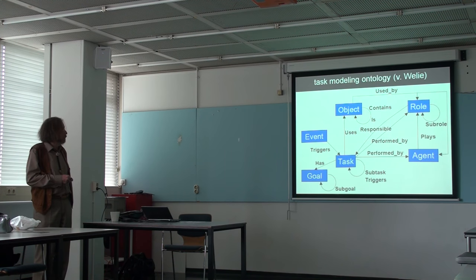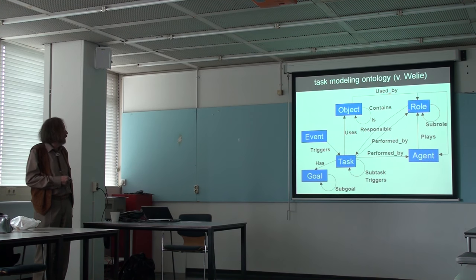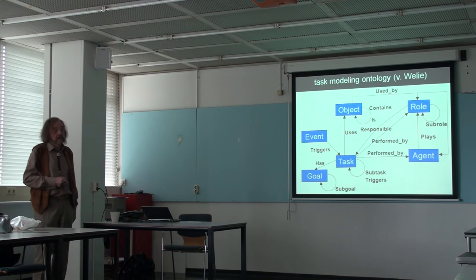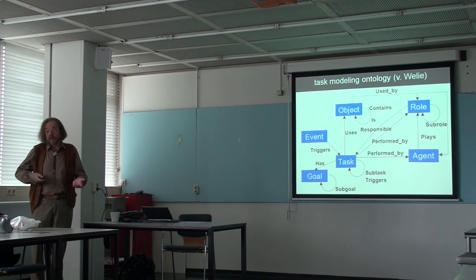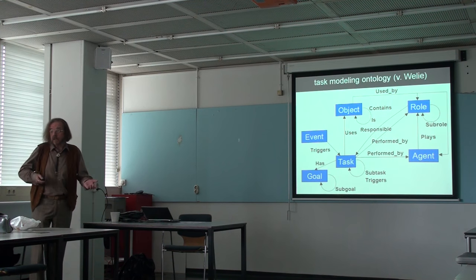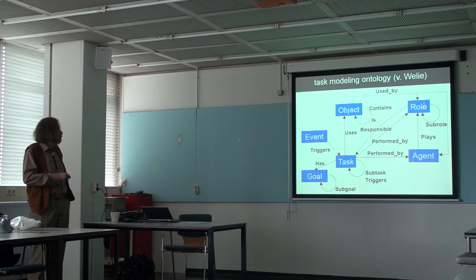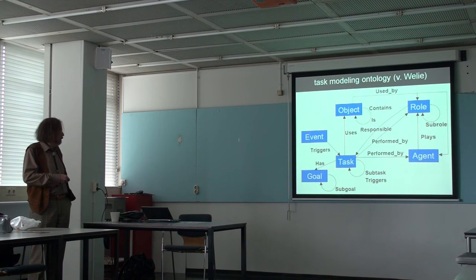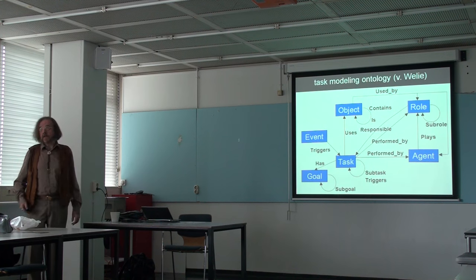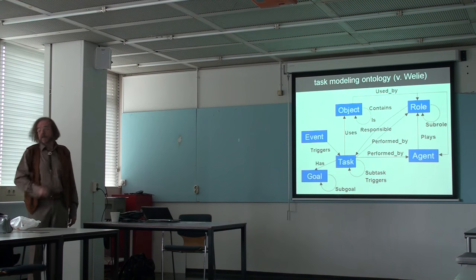Agents play roles — roles meaning being responsible for performing a task. Tasks use objects; objects can contain other objects. A folder can contain files, a file can contain lines, a line can contain words, and so on. Objects are used by agents in certain roles, and tasks have goals. Tasks can have sub-goals, and there are events that trigger tasks that need to be performed.